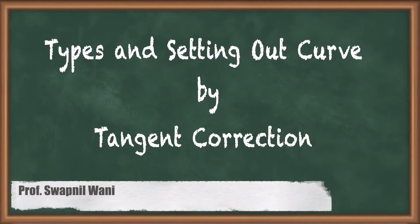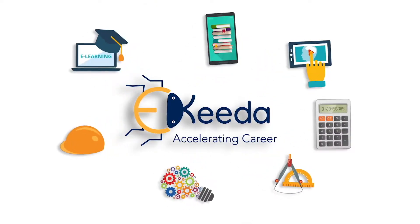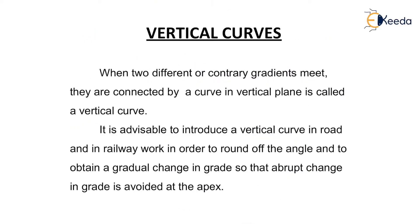In this video we are discussing types and setting out of curves by tangent correction for vertical curves. When two different grades meet, they are connected by a curve in a vertical plane, called a vertical curve. This can be of two types: summit or valley. It is advisable to introduce a vertical curve in road and railway work to round off the angle and obtain a gradual change in grade, avoiding abrupt change at the apex.